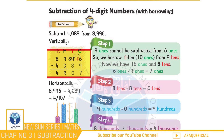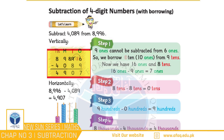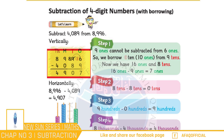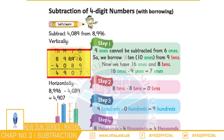Aur iske baad tens place par maujood values ko subtract karna hoga, yani 8 tens minus 8 tens jiska jawab hoga 0 tens. Aur iske baad hundreds place par maujood values ko subtract karna hoga, yani 900 minus 0 hundreds jiska jawab hoga 900. Aur aakhir mein 1000s place par maujood values subtract karni hongi, yani 8000 minus 4000 jiska jawab hoga 4000. Bacchiyon, is tarike se hamara mukammal jawab banta hai: 4,907.